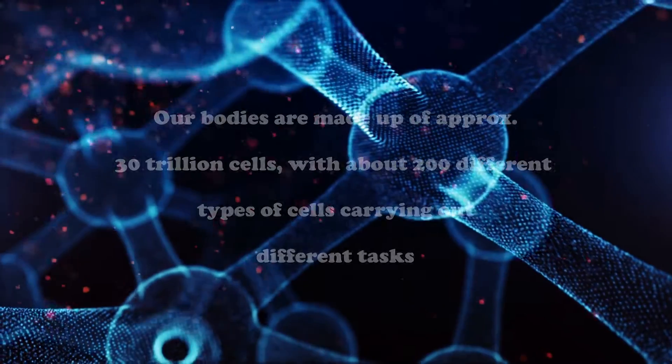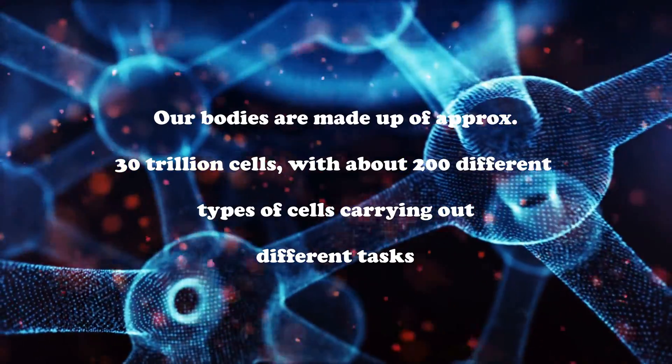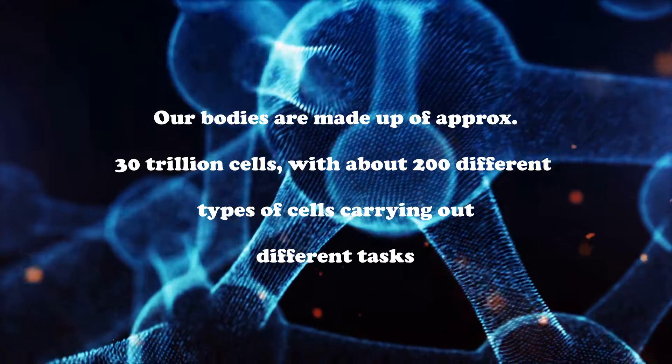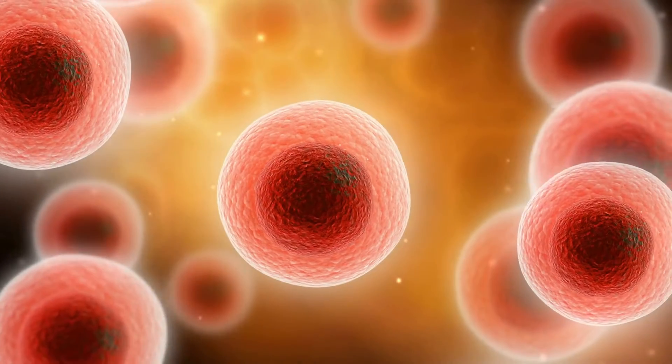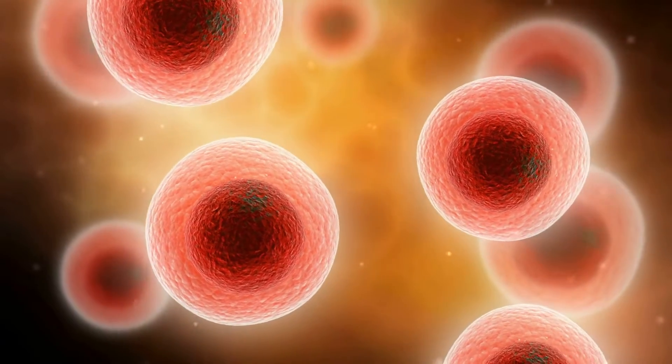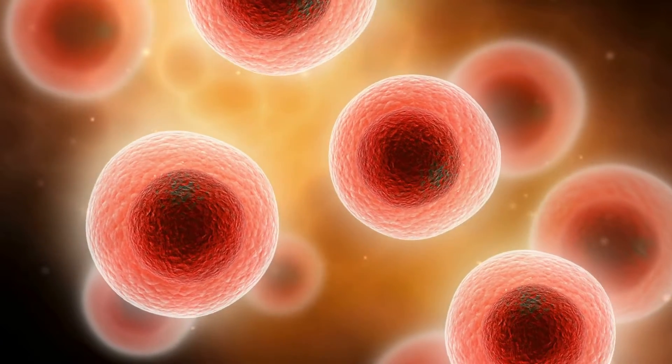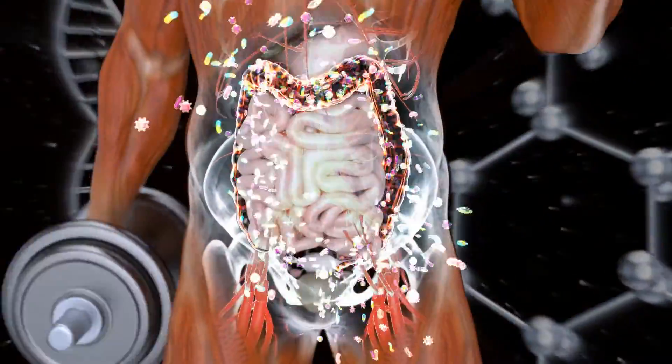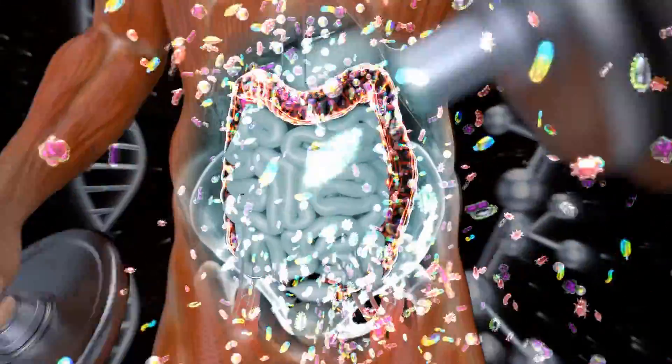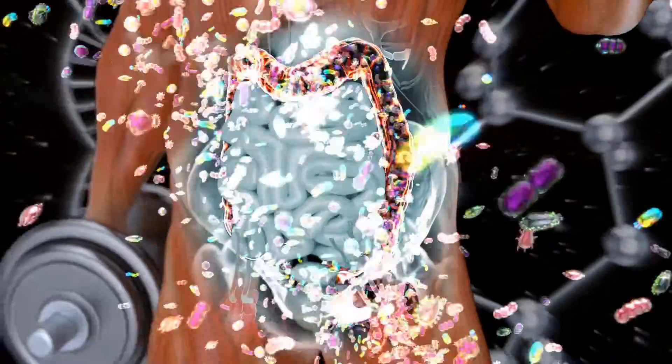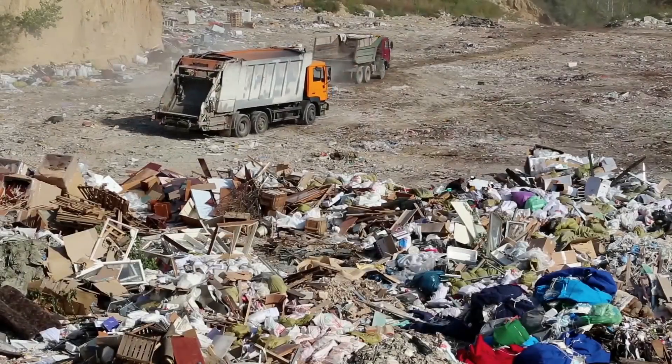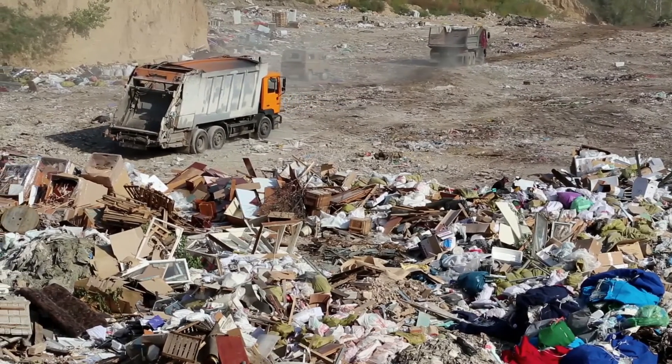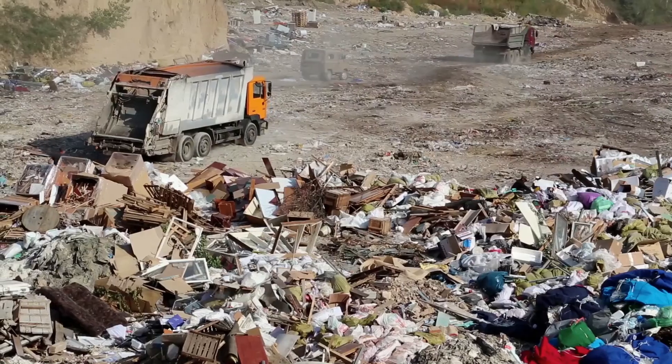Our bodies are made up of about 30 trillion cells. There are about 200 different types of cells that carry out different tasks. Our cells are like little tiny factories within our bodies and factories create waste. And if this waste doesn't get transferred out of the factory, it will eventually get out of control and the factory will seize from being productive. We humans rely on garbage trucks to transport the waste out of our factories. Our cells within our bodies rely on charged ions or electrolytes to transport the waste out of their factories.